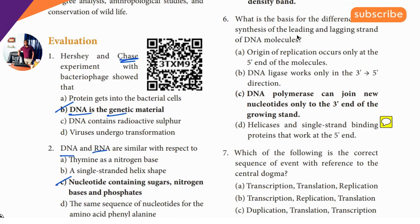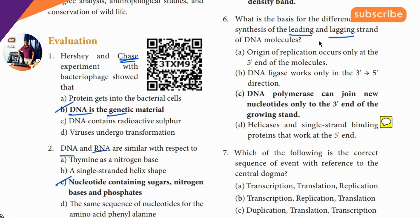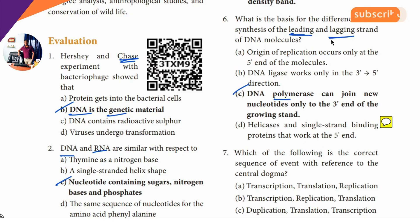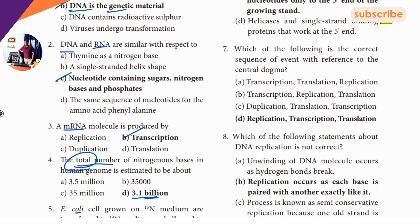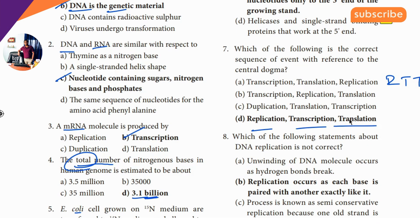Sixth question: Leading and lagging strands. The answer involves DNA polymerase. Seventh question covers replication, transcription, and translation — remember as RTT.